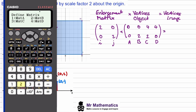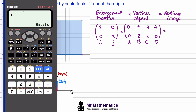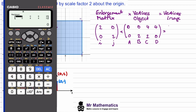Matrix B has two rows and four columns. The x-coordinates are 0, 0, 4, 4 and the y-coordinates are 0, 2, 2, 0. Now we'll go back and perform a matrix calculation — we want matrix A multiplied by matrix B.